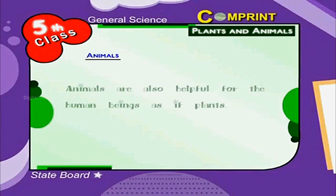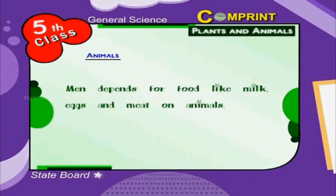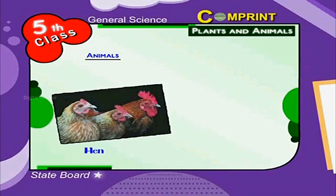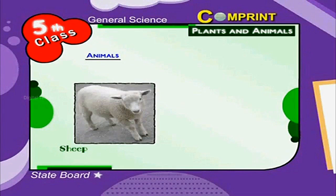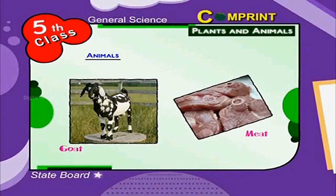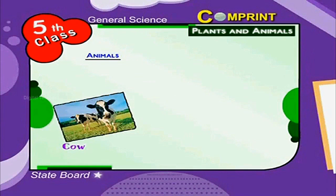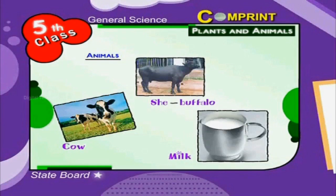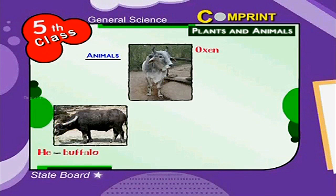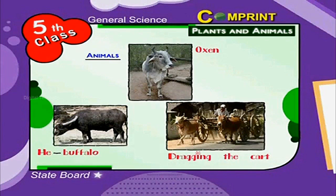Animals are also helpful for human beings, as are plants. Men depend on animals for food like milk, eggs and meat. For example, hens give eggs and chicken. From sheep we get wool and meat. From goat we get meat. Cow and buffalo give milk. He-buffaloes and oxen help the farmer to plough, drag the cart, etc.